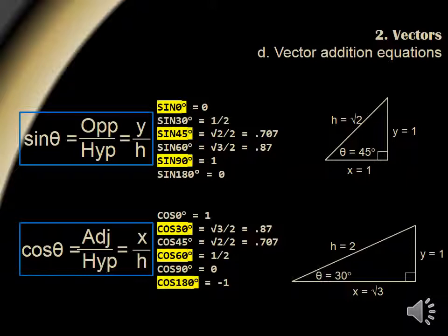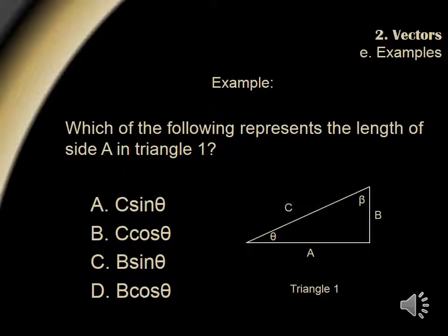It's also useful to note that in a 30-60-90 right triangle, the opposite side is half of the hypotenuse. Let's take a look at an example which asks us which of the following represents the length of side a in triangle 1. Side a is the adjacent side, and side c is the hypotenuse. We know that the cosine of theta is equal to the adjacent over the hypotenuse. Thus, if we multiply both sides by the hypotenuse, we come up with c cos theta is equal to a, or the adjacent side. Thus, c cos theta is our answer, or answer choice b.